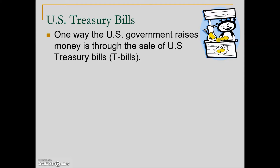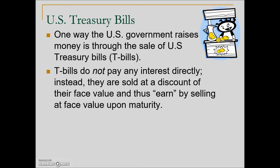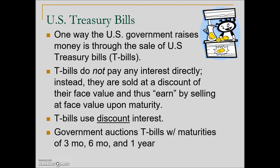Essentially, the buyer of one of these Treasury bills is acting as a loan officer or banking institution and lending money to good old Uncle Sam. T-bills do not pay any interest; instead they are sold as a discount note and thus earn money by selling at face value upon maturity. T-bills use discount interest because they are discounted, and what makes it a T-bill is that it is a very short loan with lengths of three months, six months, and a maximum of one year.